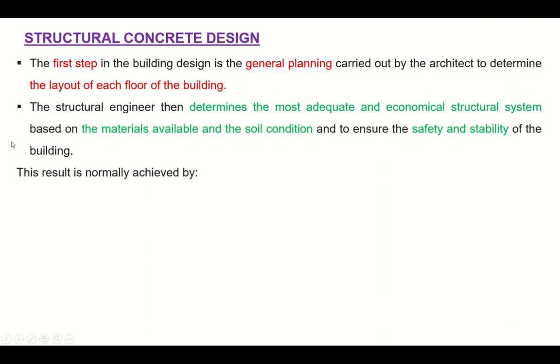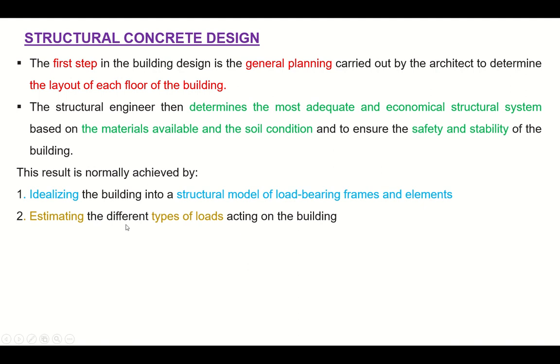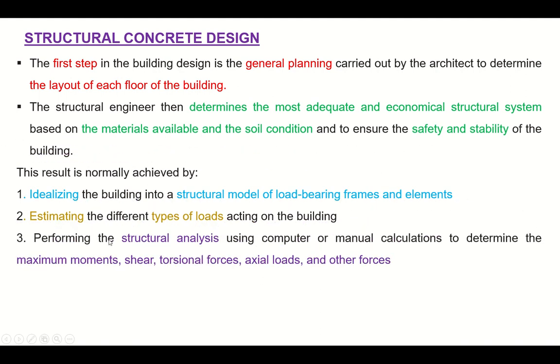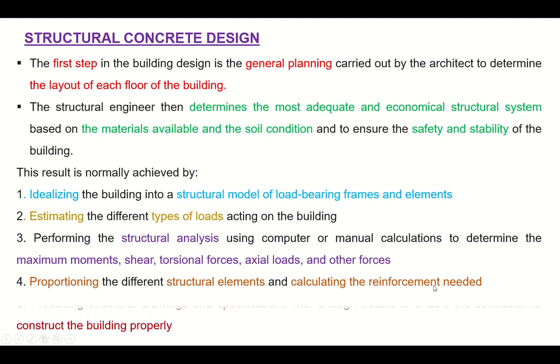To ensure the safety and stability of the building, this result is normally achieved by five steps. Number one is idealizing the building into a structural model of load-bearing frames and elements. Number two is estimating the different types of loads acting on the building. Number three is basically the demand calculation which is performing the structural analysis using computer or manual calculations to determine the maximum moments, shear, torsional forces, axial forces, and other forces. Number four is design, which is proportioning the different structural elements and calculating the reinforcement needed. And number five is producing structural drawings and specifications with enough details to enable the contractor to construct the building properly.